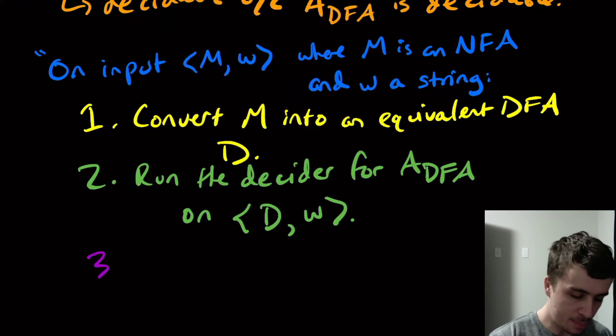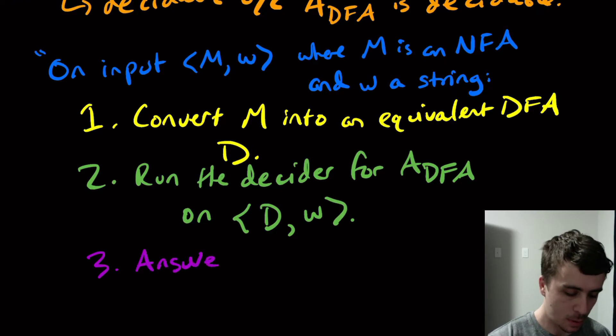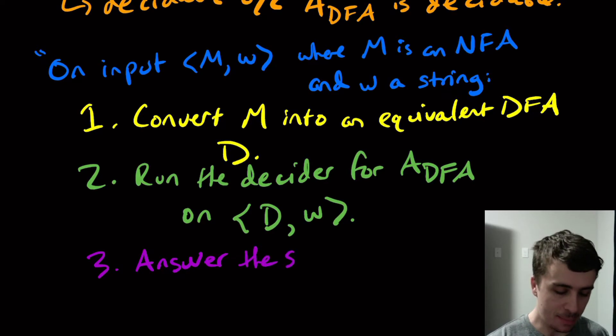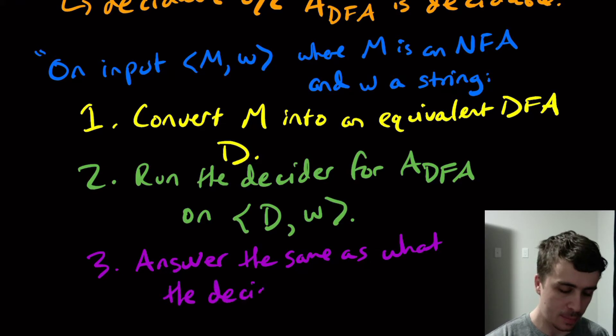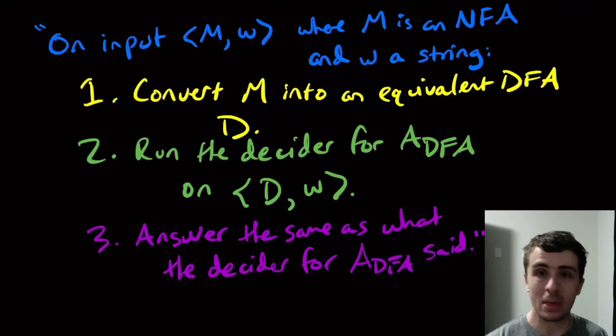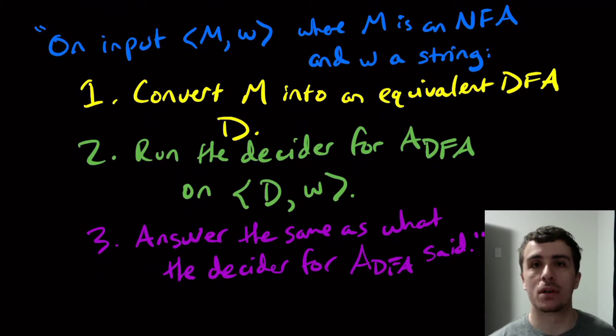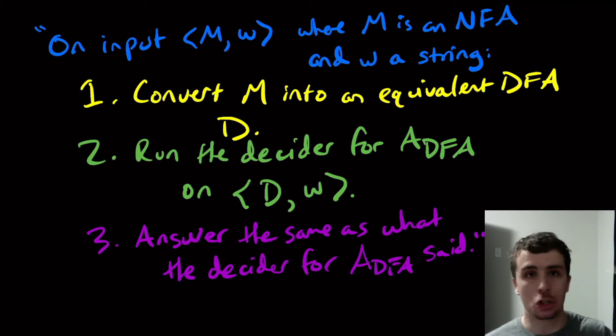And then what I'm going to do is I'm going to answer for the NFA question, I'm going to answer the same as what the decider for A_DFA said. So do exactly the same thing as whatever the decider for A_DFA says, whatever it did, just do the exact same thing.